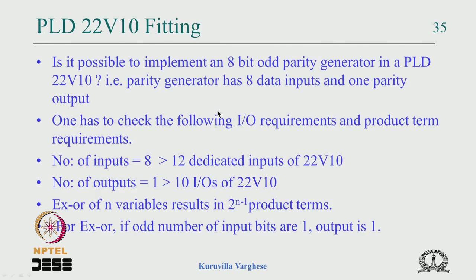For the IO requirement: the number of inputs is 8, which is less than the 12 dedicated inputs of 22V10 — that is sufficient. The number of outputs is 1, which is less than the 10 outputs available — that is also sufficient. So the IO resources are adequate.